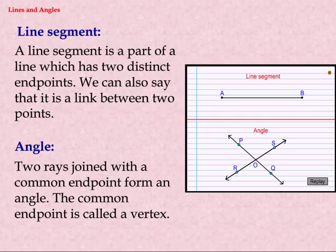Angle. Two rays joined with a common end point form an angle. The common end point is called a vertex.